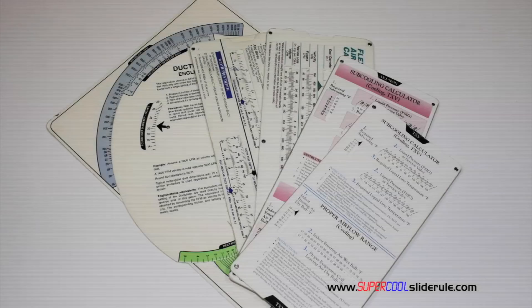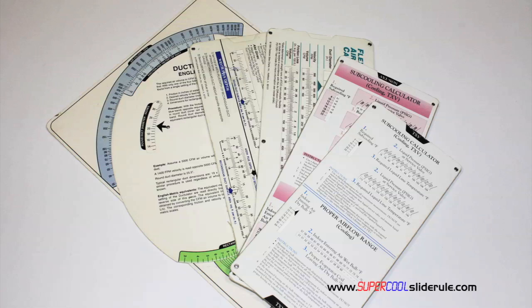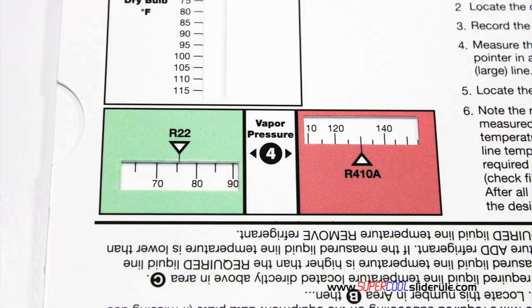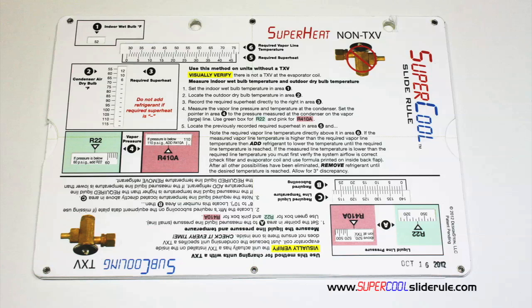Historically, technicians have carried four or five different slide rules — one for R22, one for R410A, one for metal duct sizing, one for flexible duct sizing, and yet others for diagnostics or troubleshooting. Thankfully, those days are gone. This one tool will allow you to charge a system with R22 or R410A in either the superheat or subcooling method.